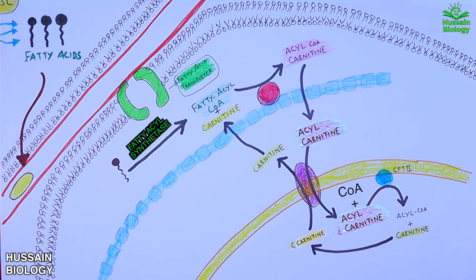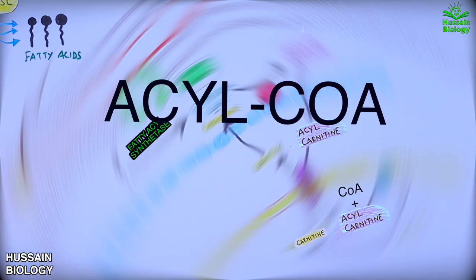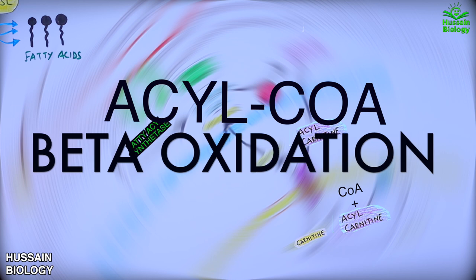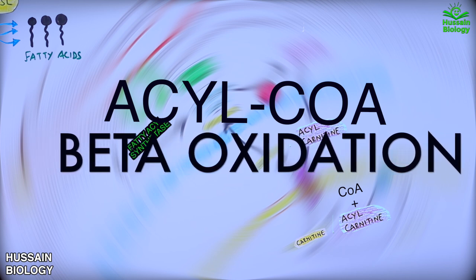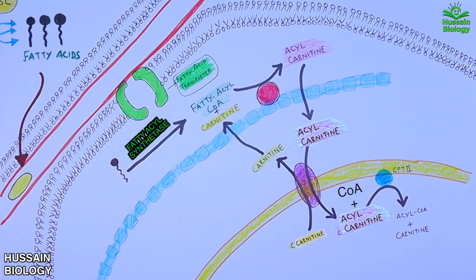And this fatty acyl-CoA is driven into beta oxidation, which yields energy-rich molecules that later drive into Krebs cycle and ETC. So this is how we mobilize fatty acids from adipocyte into the myocyte and how carnitine shuttle works.